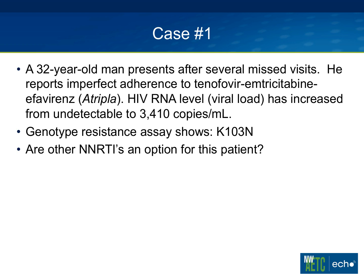Let's start with a common scenario. A 32-year-old man presents after several missed visits to the clinic. He reports imperfect adherence to tenofovir-emtricitabine-efavirenz, which is Atripla. His viral load has increased from undetectable to 3,410 copies. A genotype resistance assay shows a K103N mutation. The question is: are other NNRTIs an option for this patient?